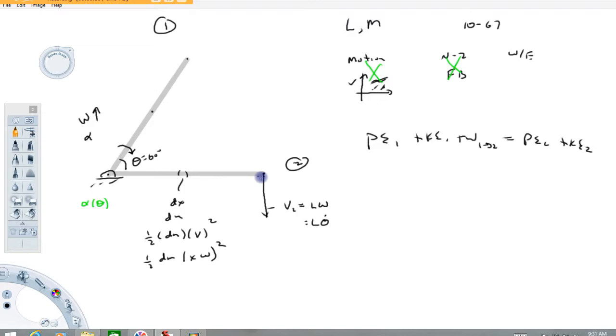This is why we use moment of inertia. This system has a moment of inertia, i, equal to one third ml squared. This you can look up. And that allows you to write the kinetic energy term in terms of the angular velocity.